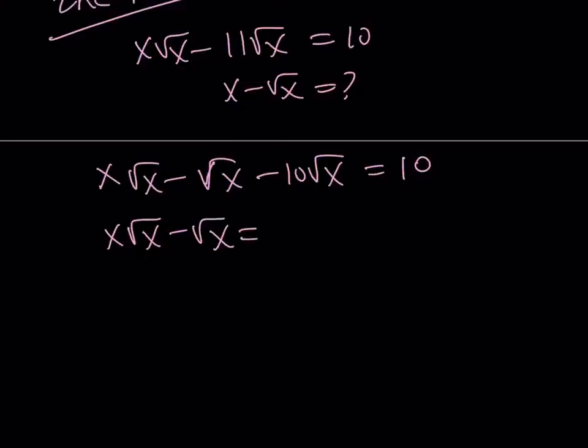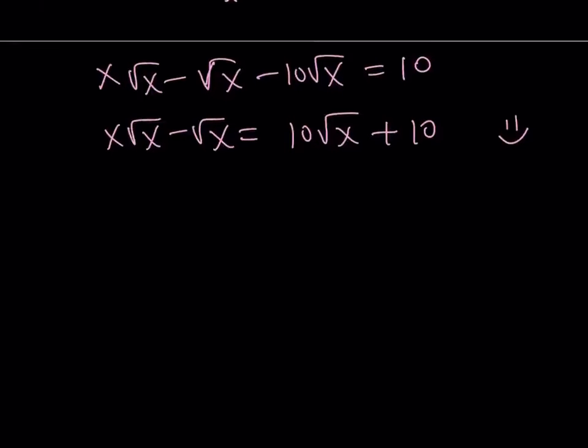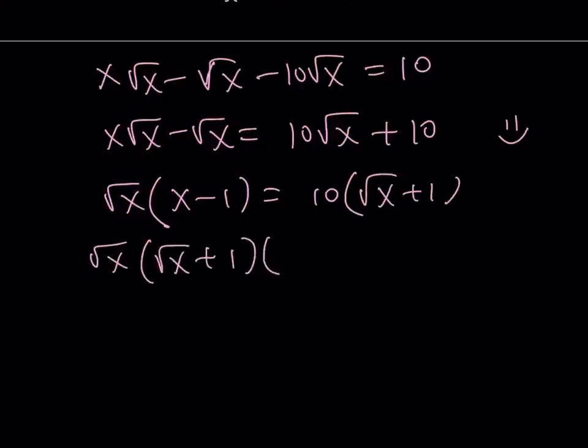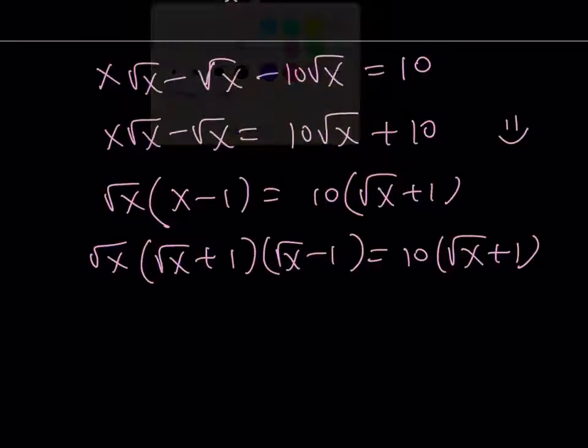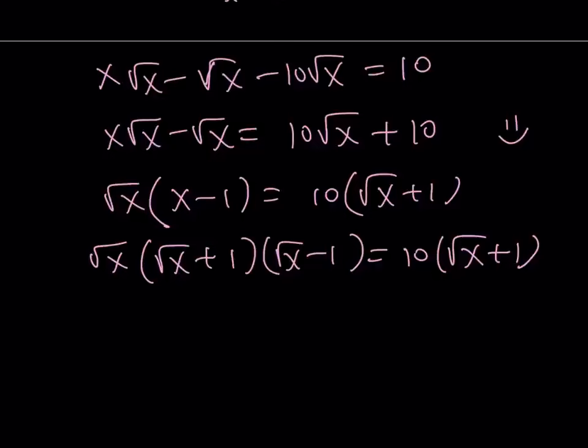I can put these guys on the same side now with the 10. Let's go ahead and put the 10s together. Now, factor out √x. And that's going to give you x - 1. Factor out 10. That's going to give you √x + 1. Now, x - 1 can be factored into (√x + 1)(√x - 1) using difference of two squares. √x + 1. If you're dealing with a real number, √x + 1 is never going to be 0 because it's always positive. It's gone.